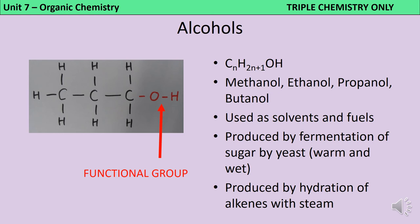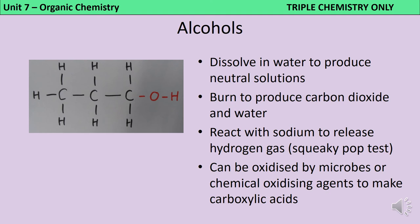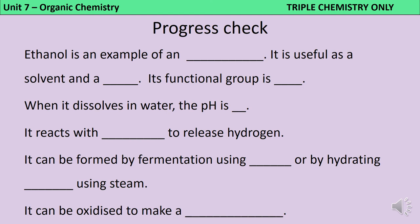In addition to being present in alcoholic beverages, ethanol and other alcohols are useful as solvents, fuels and chemical feedstocks in industry. There are two main ways to produce ethanol: firstly, you can allow yeast to ferment sugar, which requires a warm but not hot environment of around 25–35°C — this is cheap and easy but produces impure ethanol. If you need very high grade ethanol, a better idea is to hydrate ethene using steam. Alcohols dissolve in water to produce neutral solutions — the OH group is not an ion, it remains covalently bonded and doesn't raise the pH. Alcohols also burn to produce carbon dioxide and water, react with sodium to release hydrogen, and can be oxidized by microbes or chemical oxidizing agents like potassium dichromate to make carboxylic acids.